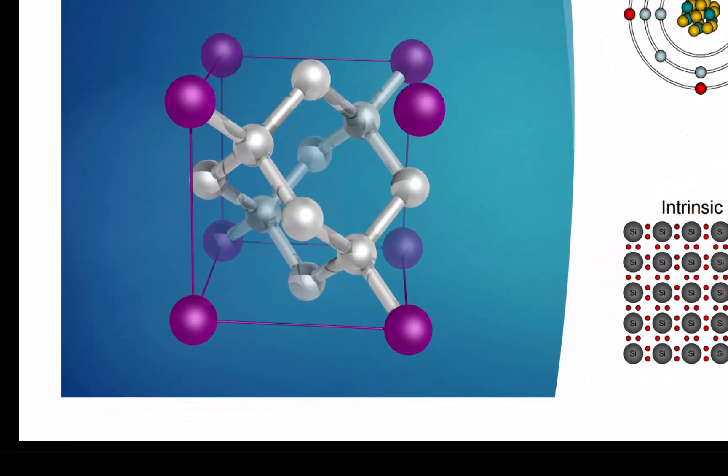Single crystal silicon has a diamond lattice structure. Each atom has four nearest neighbors.